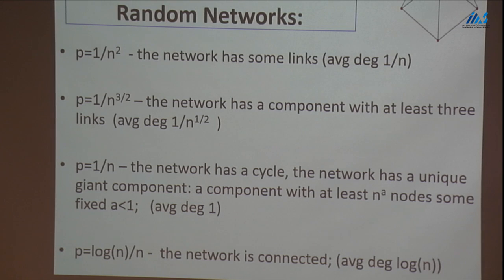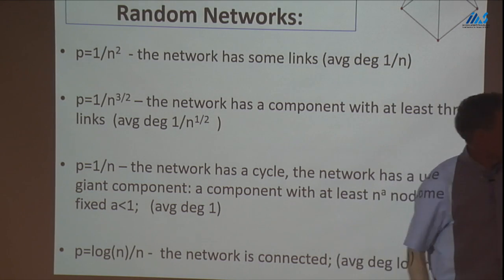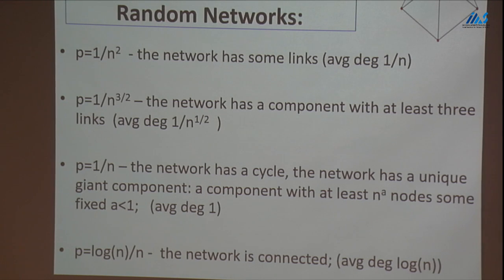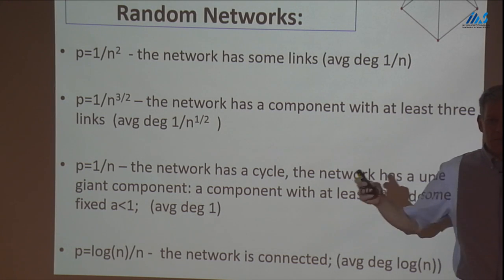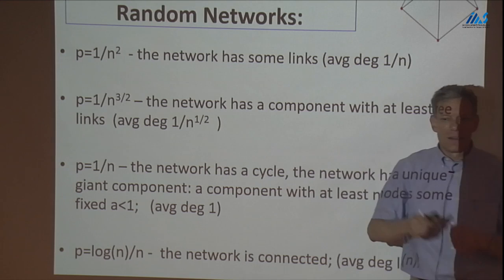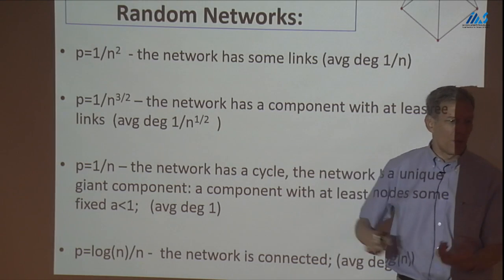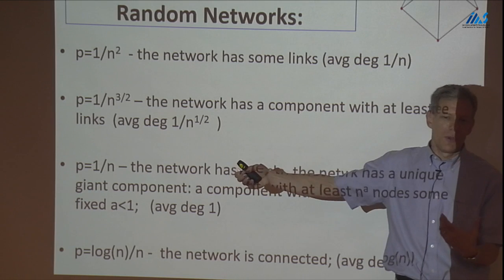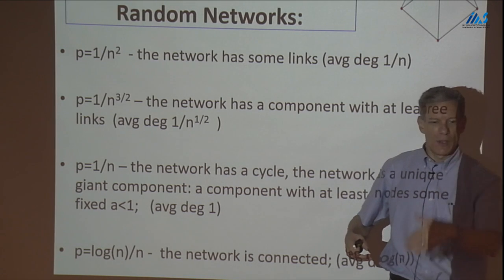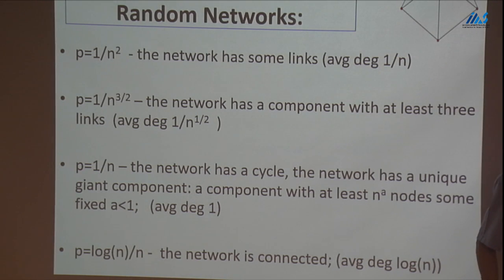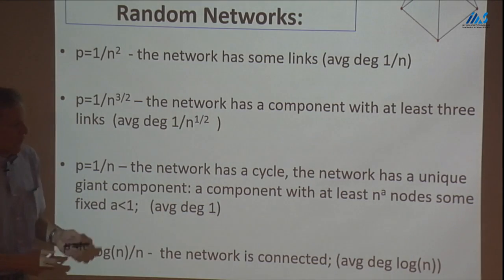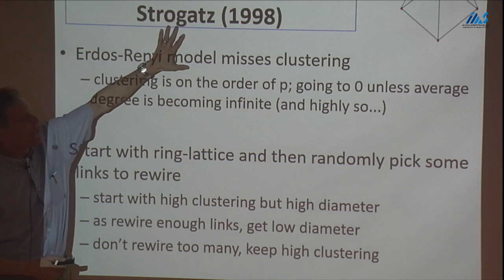At the log n / n threshold, d ~ log n, so the diameter is log n / log log n. Above that threshold with higher p, the diameter is even smaller. The key point is it's much smaller than n — connecting a million people doesn't require path lengths close to a million.